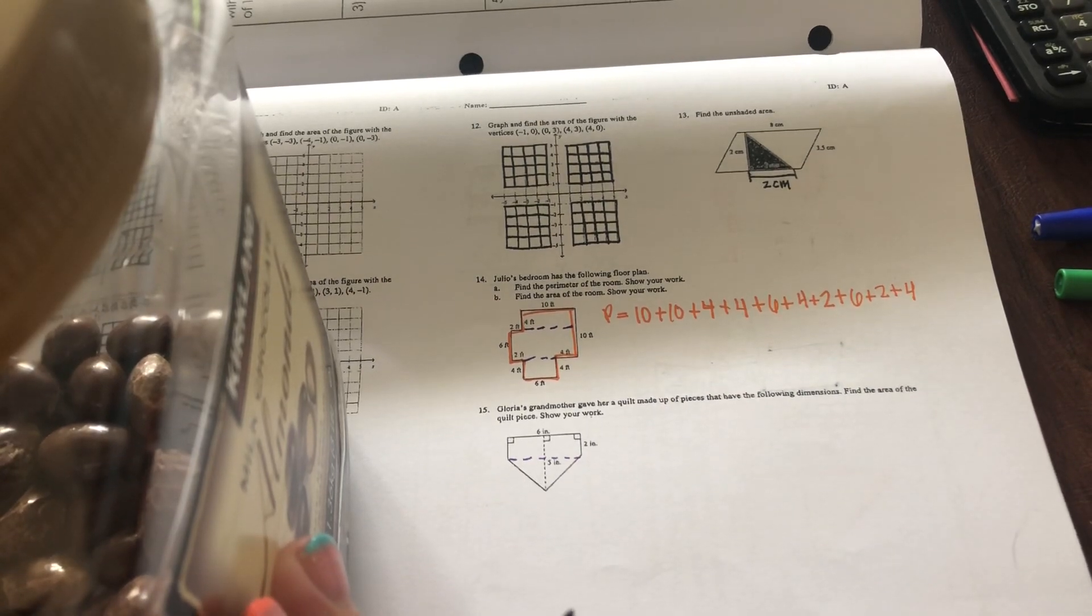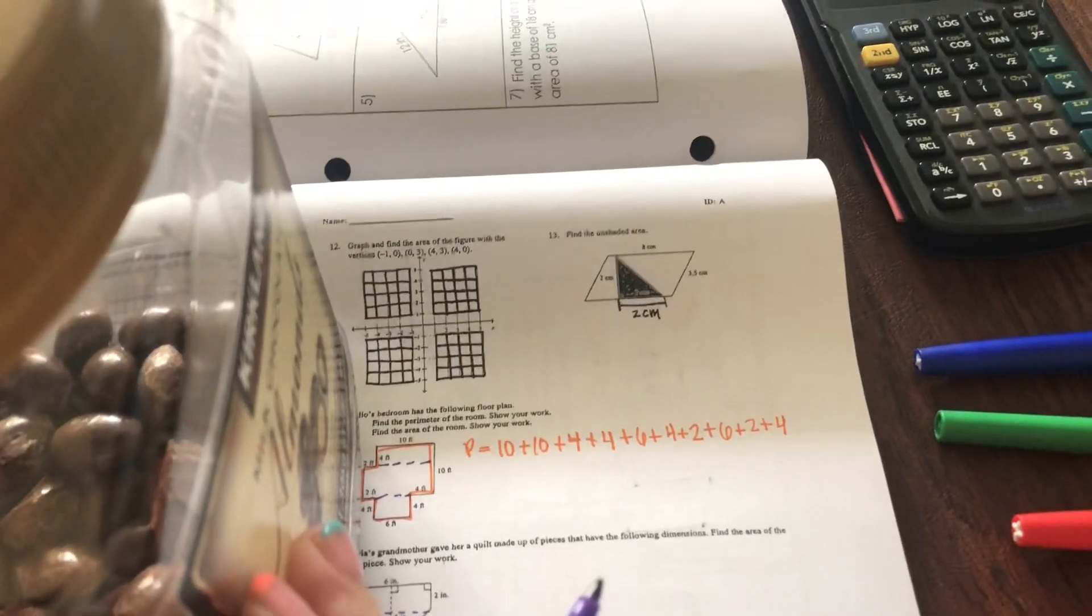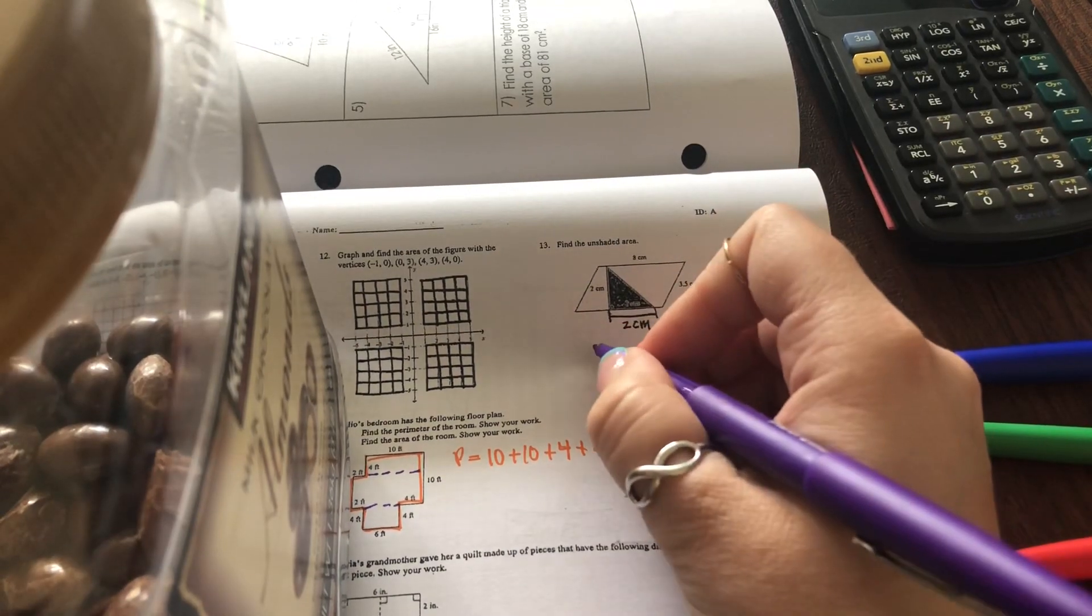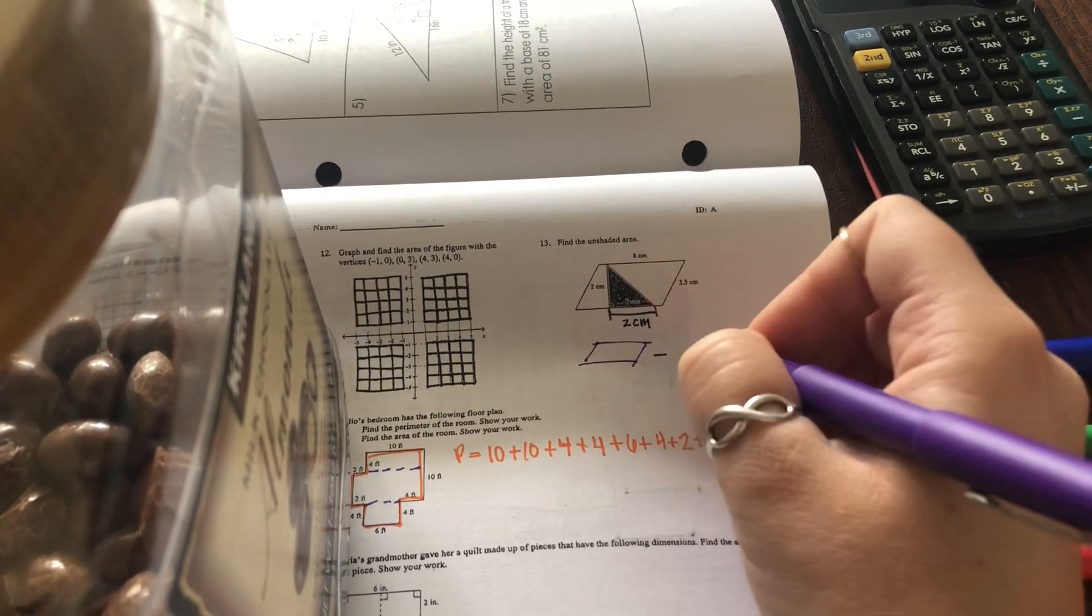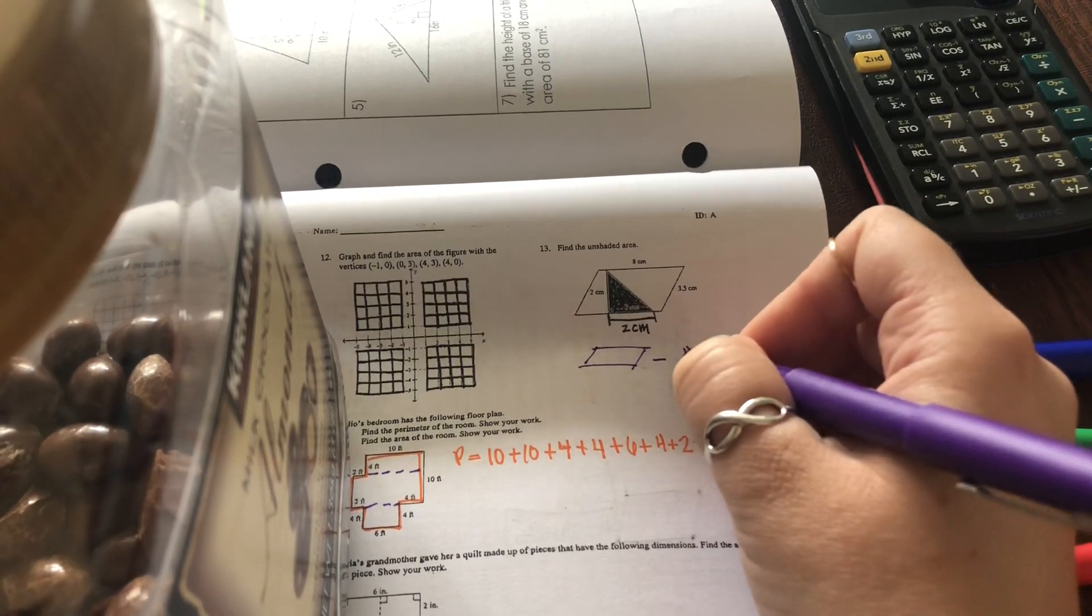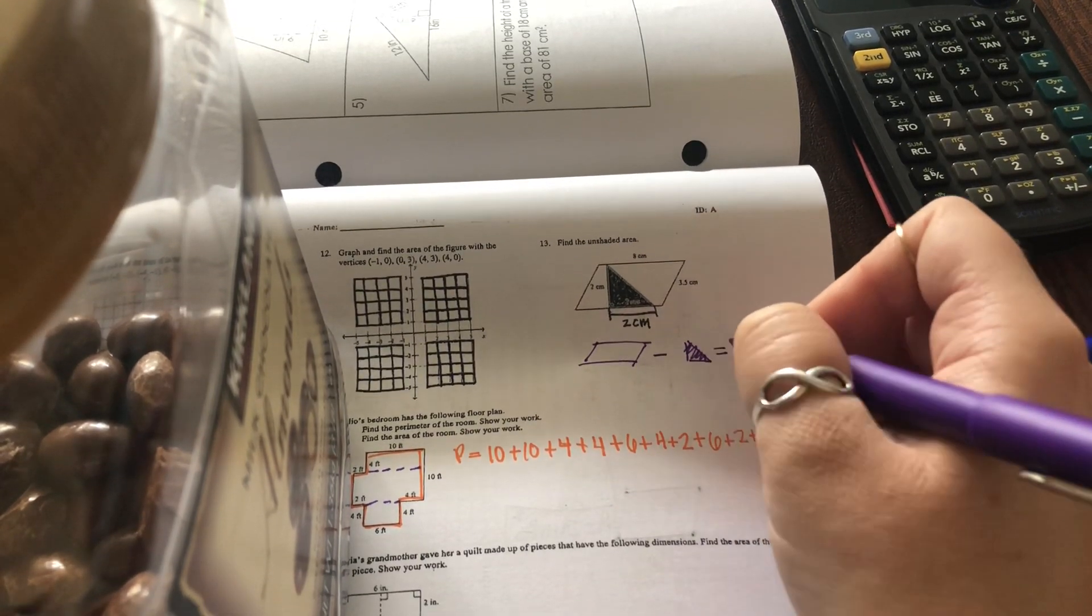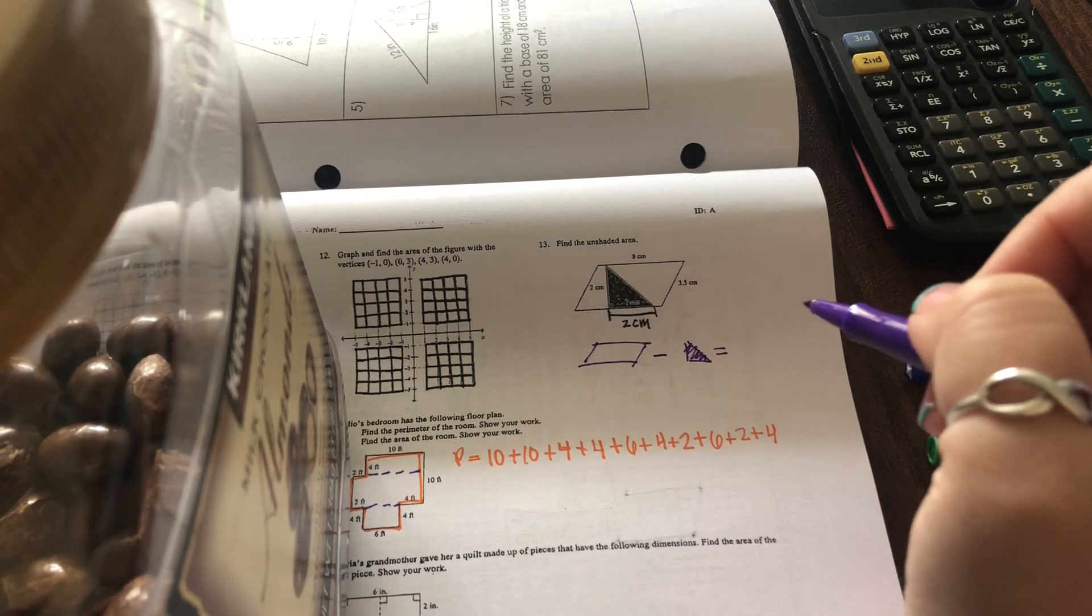And then for number 13, it says find the area of the unshaded region. So if you find the area of the parallelogram and subtract that triangle, you will have the unshaded portion.